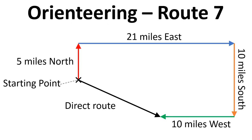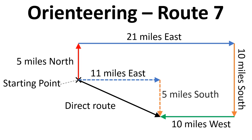By looking at the vectors we can see that our total displacement east is 11 miles. That's because we've gone 21 miles east and then come back 10 miles west. And our total displacement south is 5 miles — that's because we went 5 miles north and then 10 miles south.